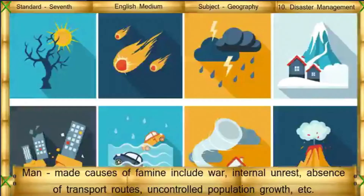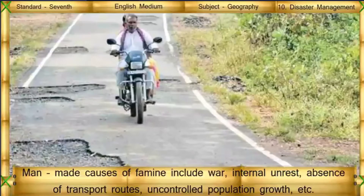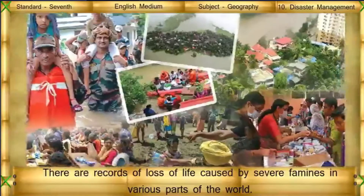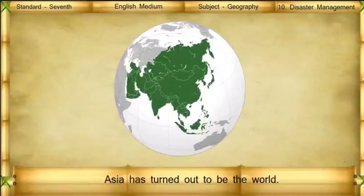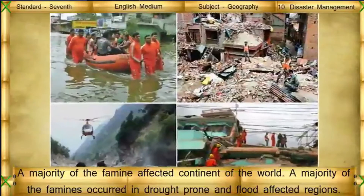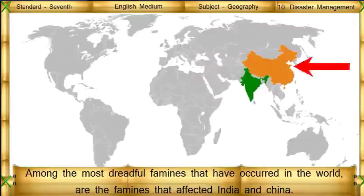Man-made causes of famine include war, internal unrest, absence of transport routes, and uncontrolled population growth. There are records of loss of life caused by severe famines in various parts of the world. Asia has turned out to be the most famine-affected continent. A majority of famines occurred in drought-prone and flood-affected regions. Among the most dreadful famines are those that affected India and China.